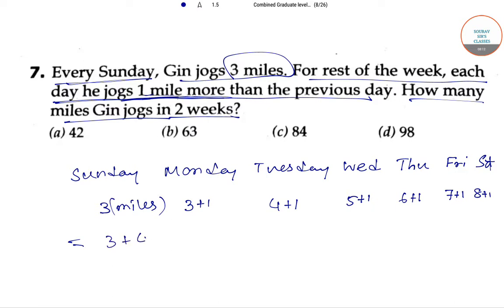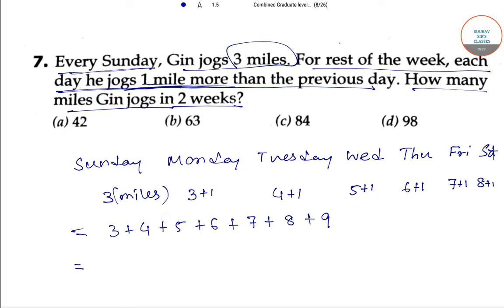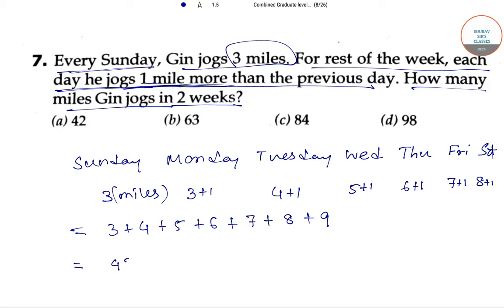So let's add up: 3 plus 3 plus 4 plus 5, 6, 7, 8, 9. So in total, that is 42 miles in a week.